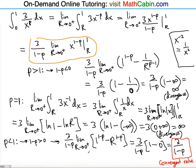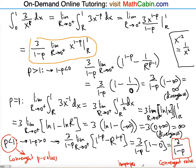So the convergent p values are p less than 1, and for those values the improper integral converges to 3 over 1 minus p. Thanks for watching — hope this was helpful, and see you in the next video.